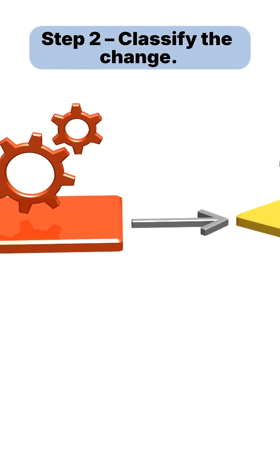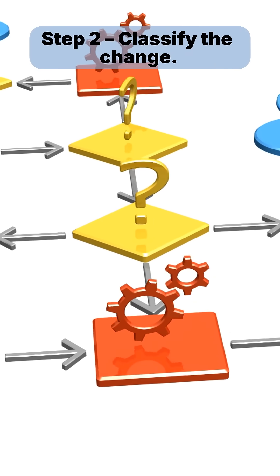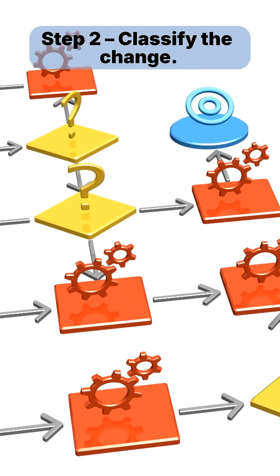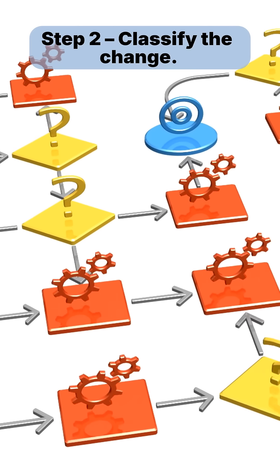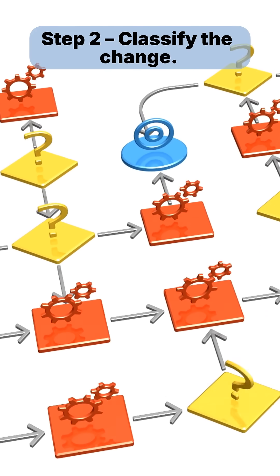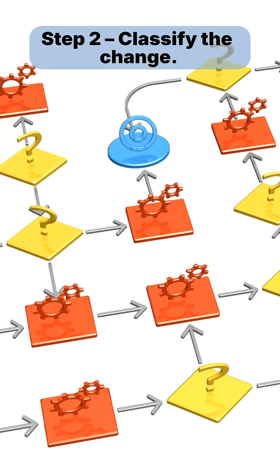Step 2: Classify the change. Not all changes are equal. A standard change is pre-approved and low risk. A normal change follows the full process with approvals. An emergency change is for urgent fixes only — not a shortcut.